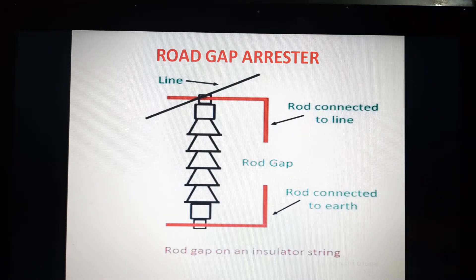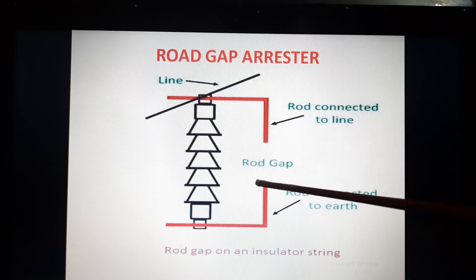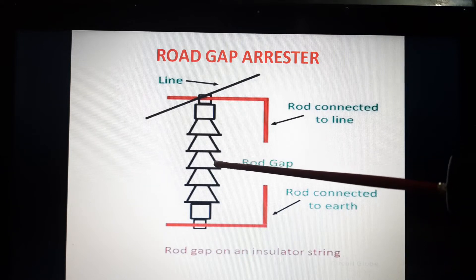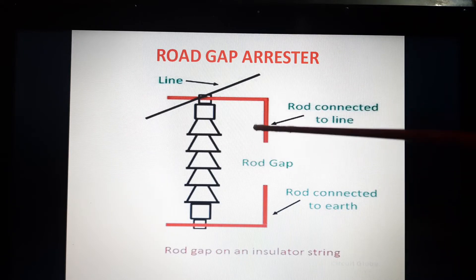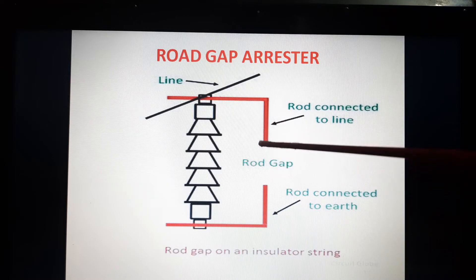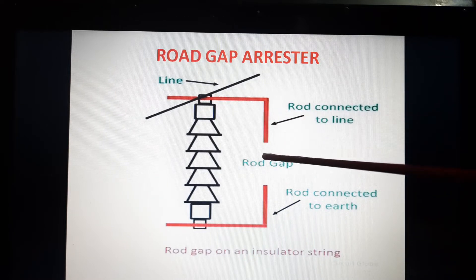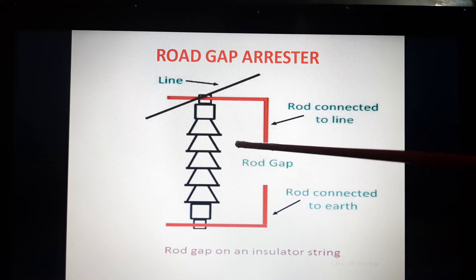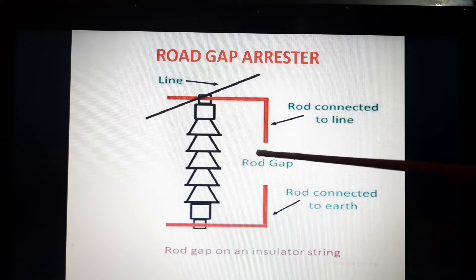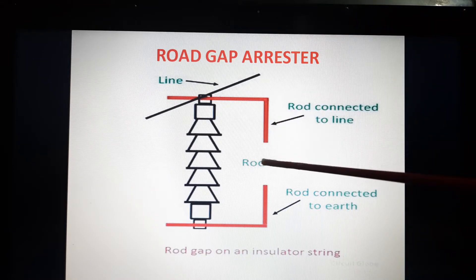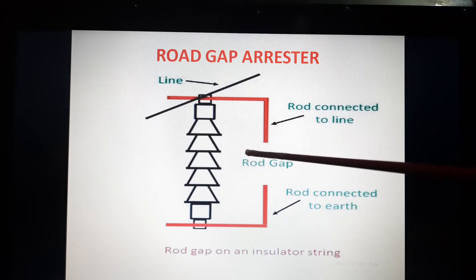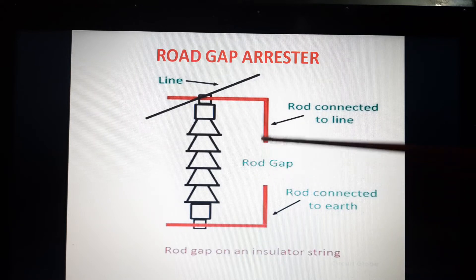One thing we have to be very clear: the distance between the gap and the insulator must not be less than one third of the gap length. Otherwise, the arc may reach and damage the insulator. So we have to keep this distance greater than one third of the gap length.